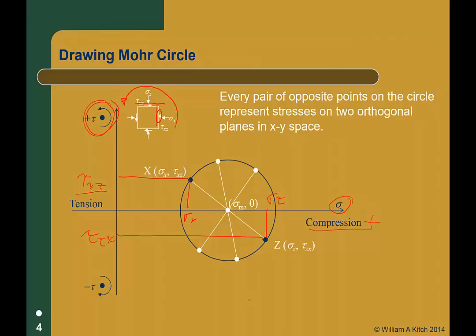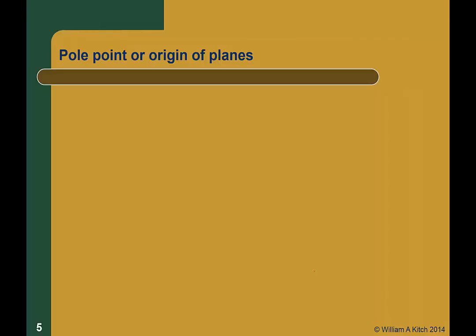It is important to point out that the Mohr's circle is in sigma-tau space and not xz space. In the Mohr's circle plot, the horizontal axis always represents normal stress sigma and the y-axis represents shear stress tau — these are not the xz directions in physical space. There is a relationship between the location of points in the Mohr's circle and xz space, and that relationship is best understood by the pole point or origin of planes. The pole point is a special point on the Mohr's circle that can be used to determine the physical orientation of stresses acting at a point.